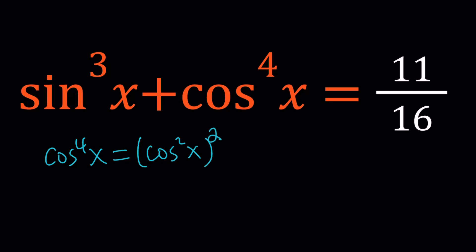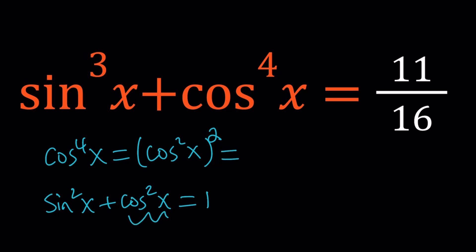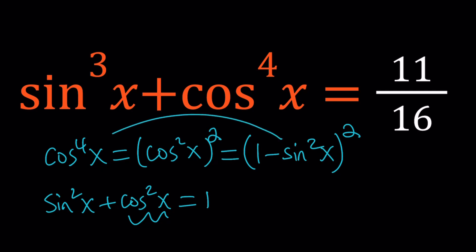As you know, the Pythagorean identity gives us sine squared x plus cosine squared x equals 1 — a really nice and beautiful identity. We can replace cosine squared with 1 minus sine squared. Of course, we have to square that one more time, so this replaces cosine x to the fourth power in our equation, and sine cubed x stays the same.